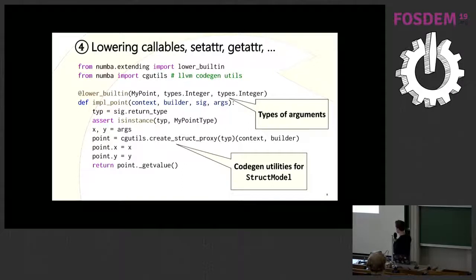Then this information can be used when you're going to actually lower the implementation of your callables. As we had before, we had your MyPoint constructor, which takes two arguments, an integer argument, the x and then the y. The lower building is a decorator to say, I have a callable that I want to lower. I have an instruction that I want to lower. This can also be a set adder, a get adder, an addition, basically any operation. And you're going to say, for this particular signature, this is the implementation of the LLVM code.